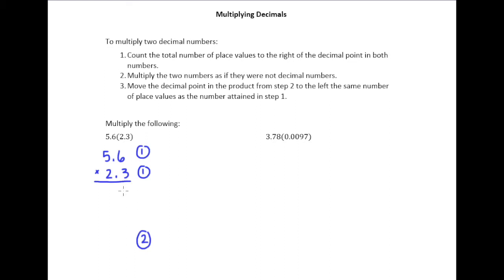Well we can do that. 3 times 6 is 18, 3 times 5 plus 1 is 16. Put a zero there for the tens place. 2 times 6 is 12, 2 times 5 is 10 plus 1 is 11. So we have 8, 8, 2, and 1. So 1,288 is what we get after step 2.